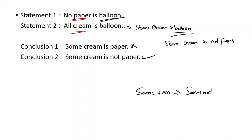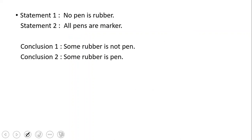Now we are going to use some cream is paper and some cream is not paper. We are going to use a complementary name. We are going to use some and all. They have only two. One question: no pen is rubber and all pens are marked. Conclusion: some rubber is not pen, some rubber is pen.